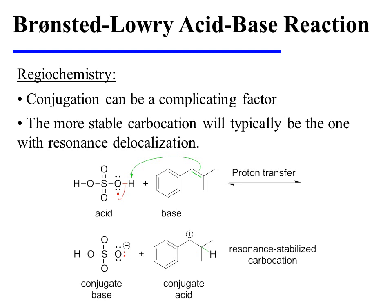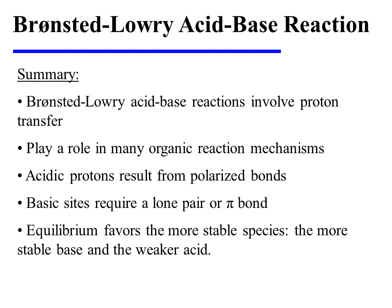It's important to note that conjugation can be a complicating factor. The more stable carbocation will typically be the one that has resonance delocalization. So in the following specific example, if we were to follow Markovnikov's rule and protonate the carbon of the alkene that has more hydrogens, we would actually end up with a carbocation at this location, which would not enjoy resonance stabilization. Instead, in this instance, the alkene is protonated here, so that the carbocation that results is conjugated to the benzene ring, and is therefore more stable.